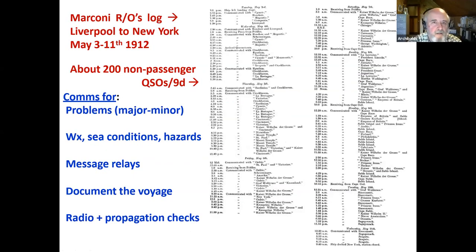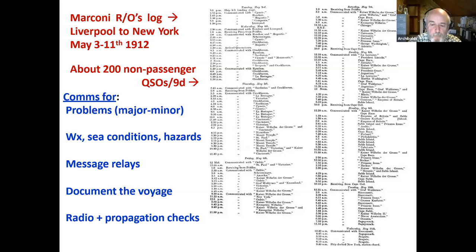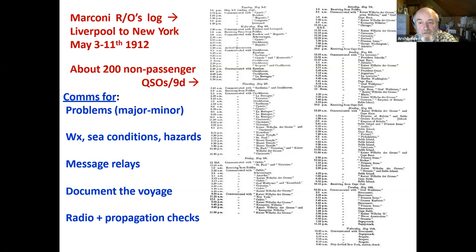I know you can't read this, but I just wanted to give you a feel for what the job of a radio officer at that time was like. This is from another ship that left Liverpool on May 3rd — just a couple of weeks after the Titanic — and the route would have been exactly the same, the main passenger line from Britain to New York. On the left side are the times, on the right are the names of either shore stations or ships, and about 90% of them are ships. So in a single crossing of the Atlantic, he worked about 200 contacts — not passenger messages, but routine ship traffic.